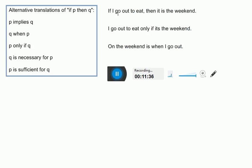But just as an example, if I go out to eat, then it is the weekend. So we could say going out to eat implies it's the weekend. Over here, I go out to eat only if it's the weekend. Well, that's the same as P implies Q. Only IF, right? So that's the same as O implies W. And ON THE WEEKEND is when I go out. So Q WHEN P is the same as P implies Q. This would also logically be equivalent to O implies W.